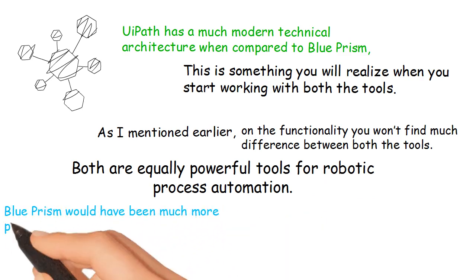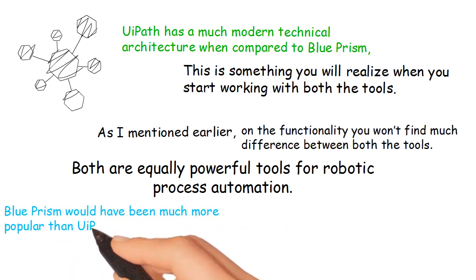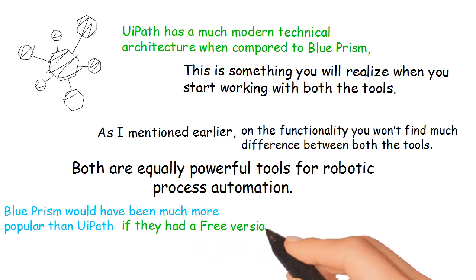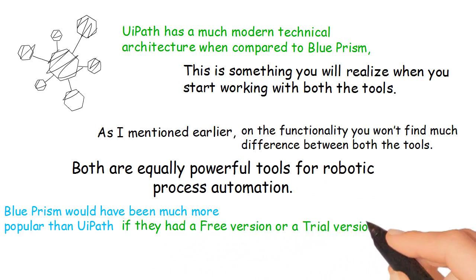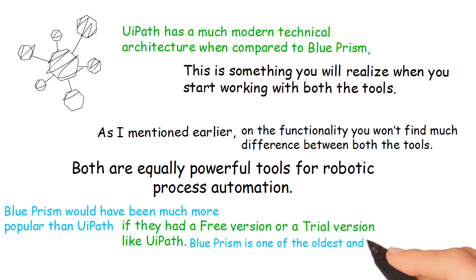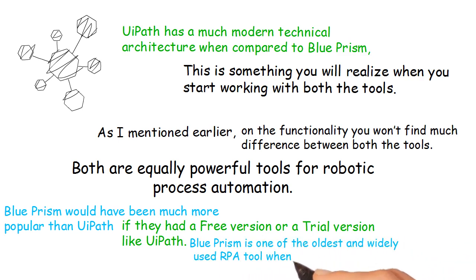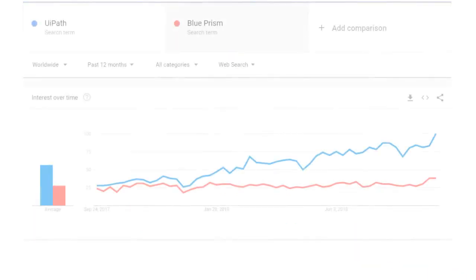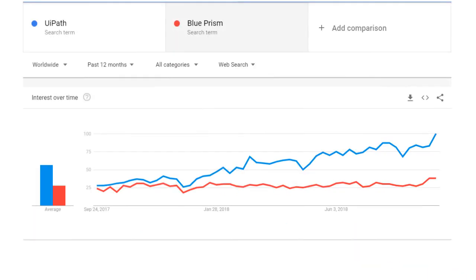Blue Prism would have been much more popular than UiPath if they had a free version or trial version like UiPath. Blue Prism is one of the oldest and widely used RPA tools, whereas currently UiPath is the most trending RPA tool as per Google Trends and also in terms of funding.